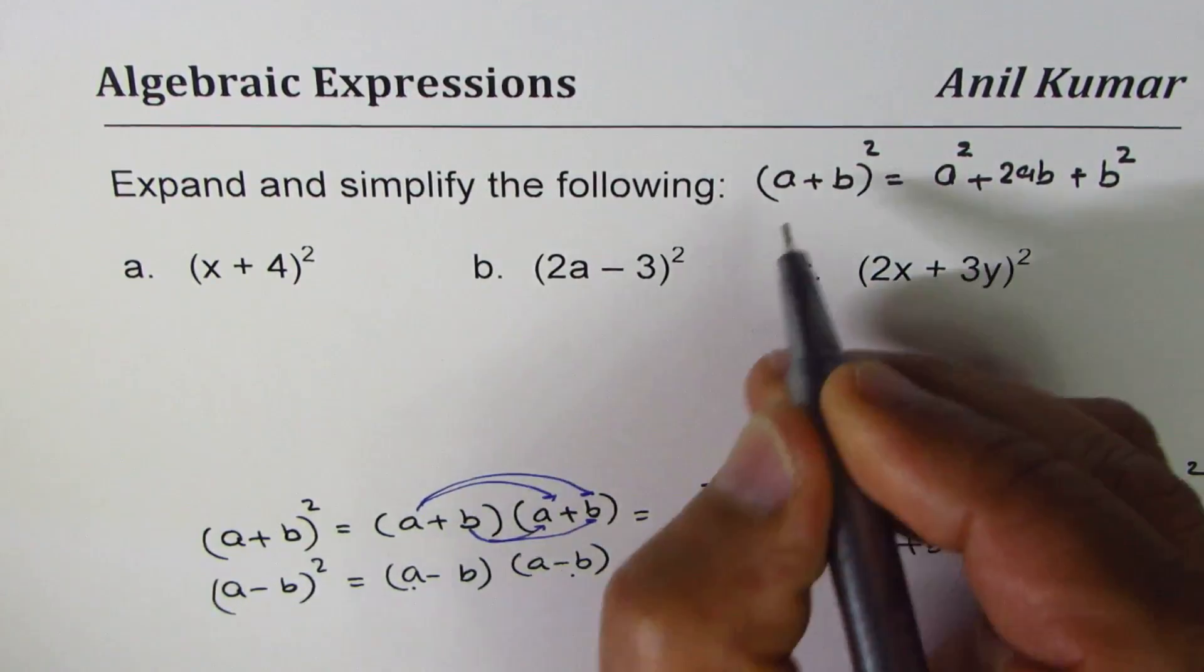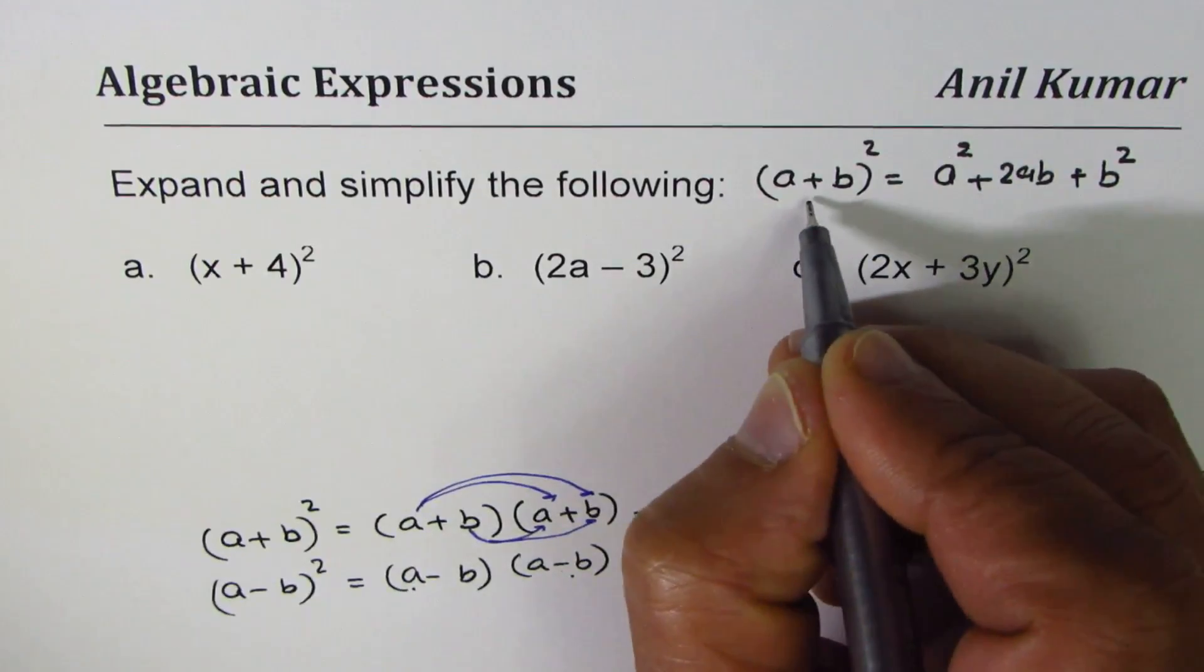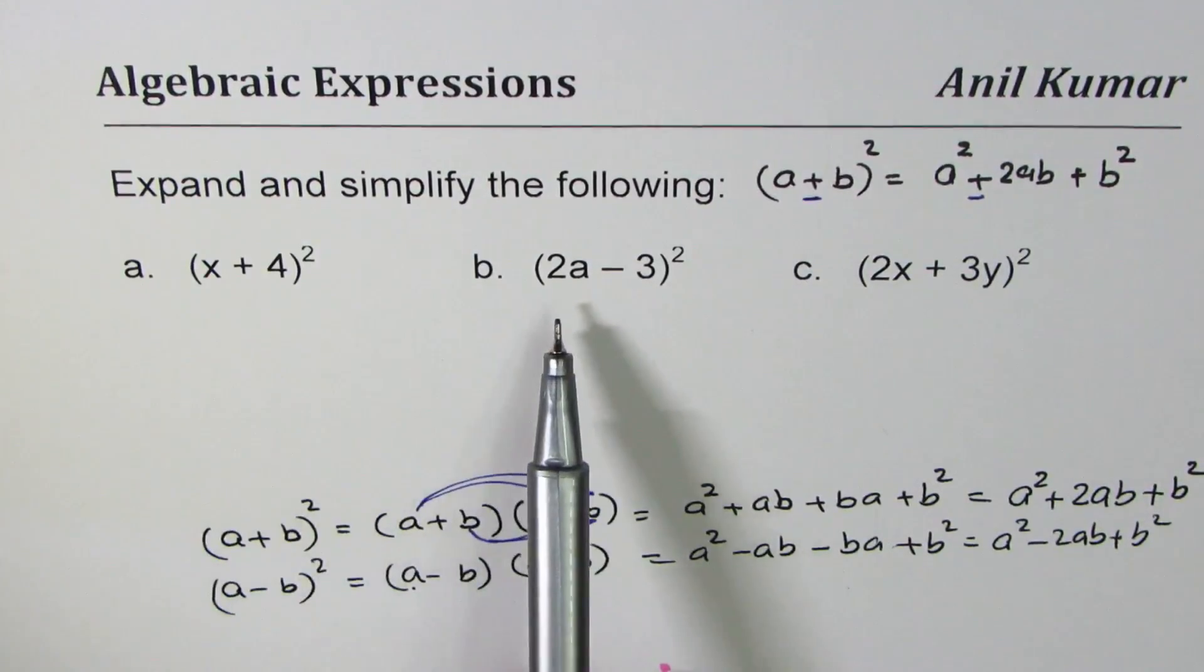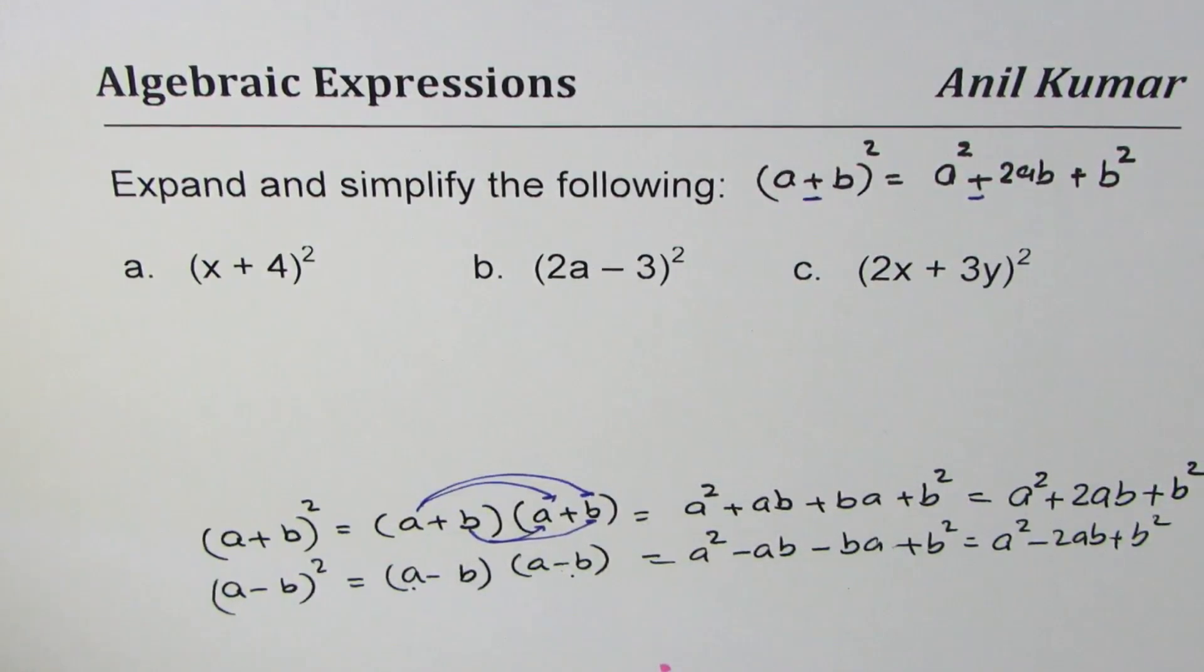So the formula is that if I have plus I have plus 2ab. If I have minus here I get minus 2ab. So I am going to apply this formula to expand and simplify.